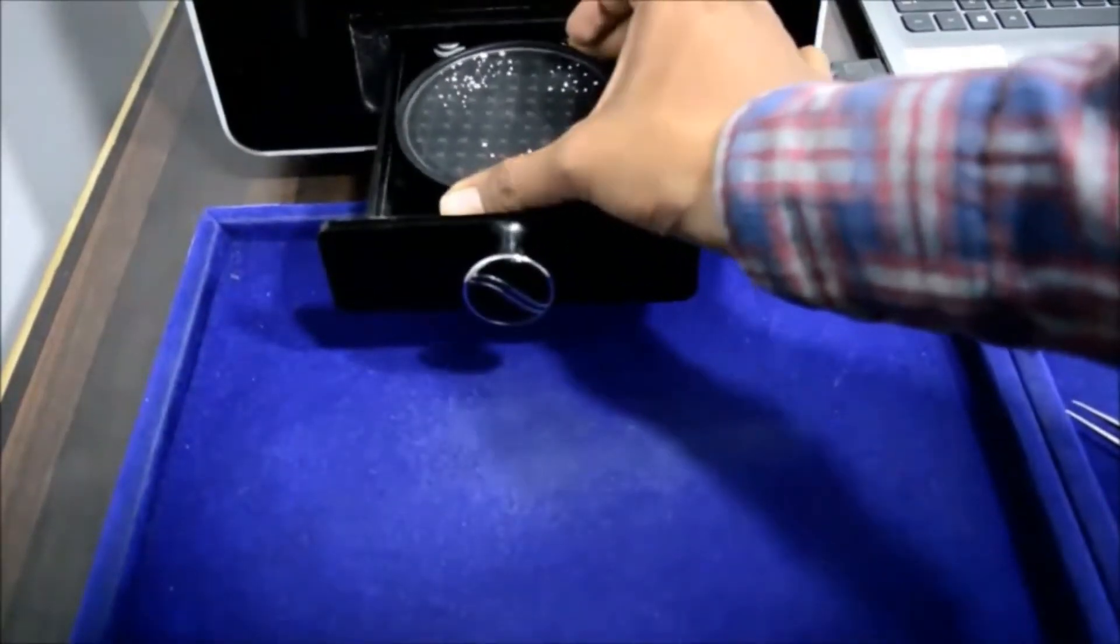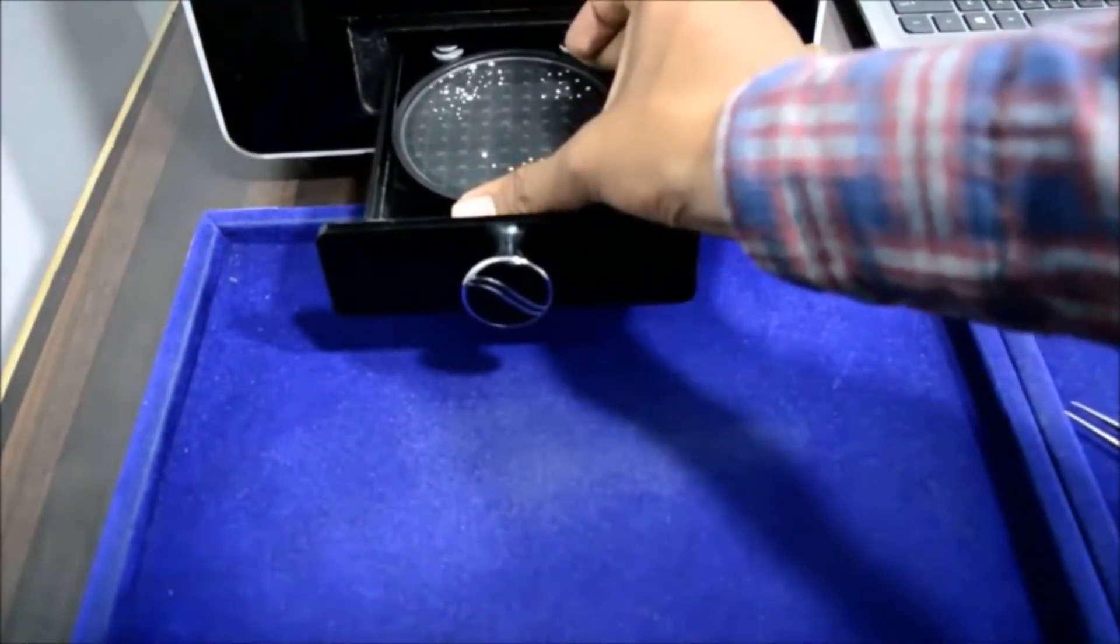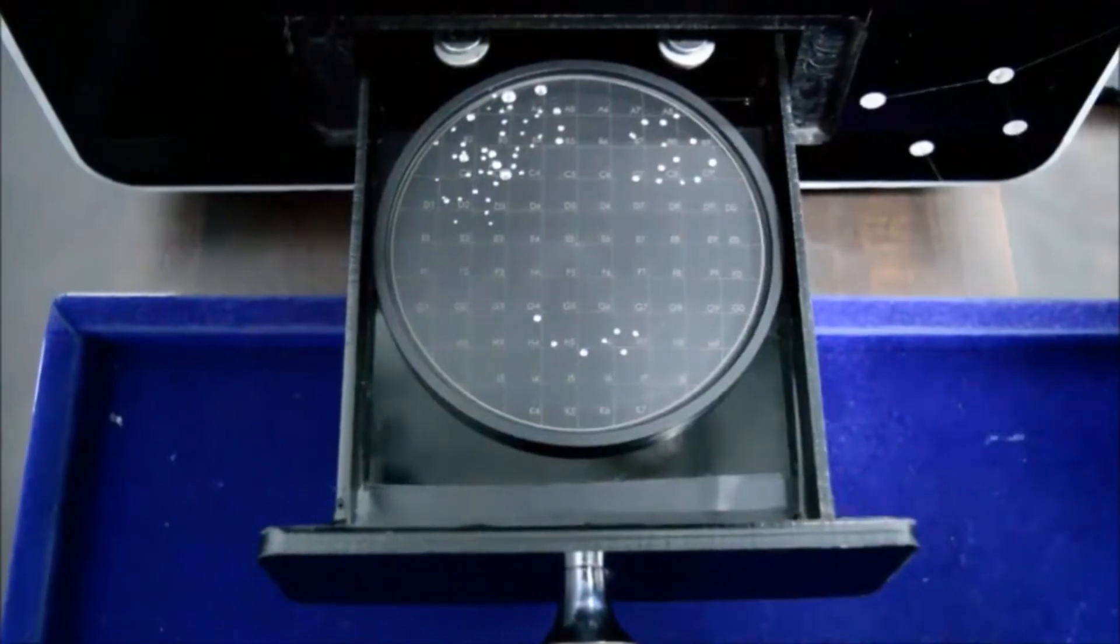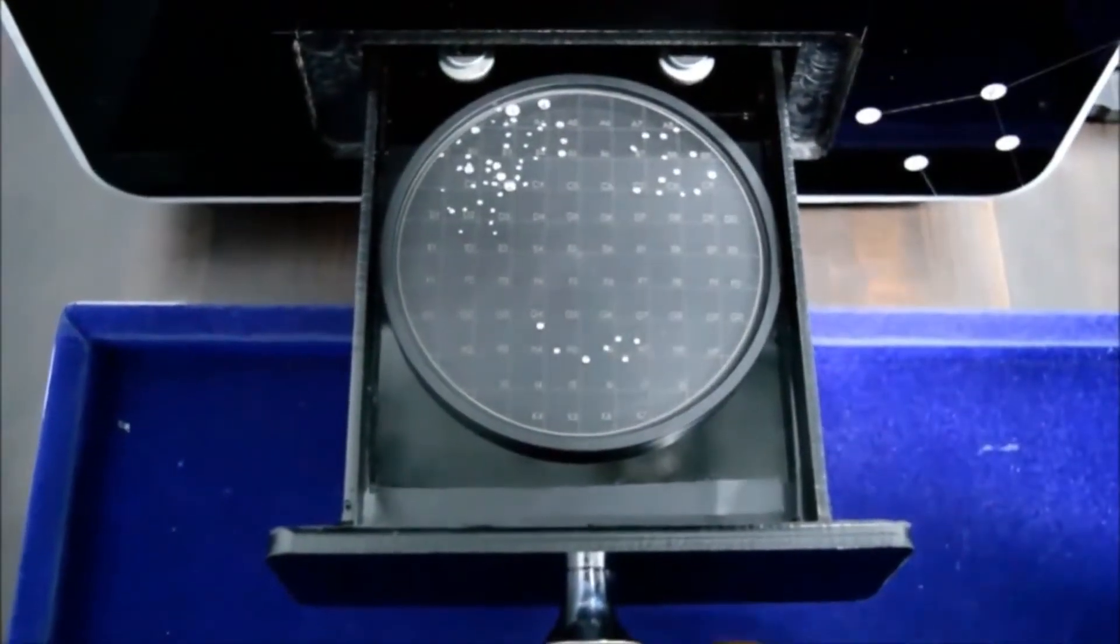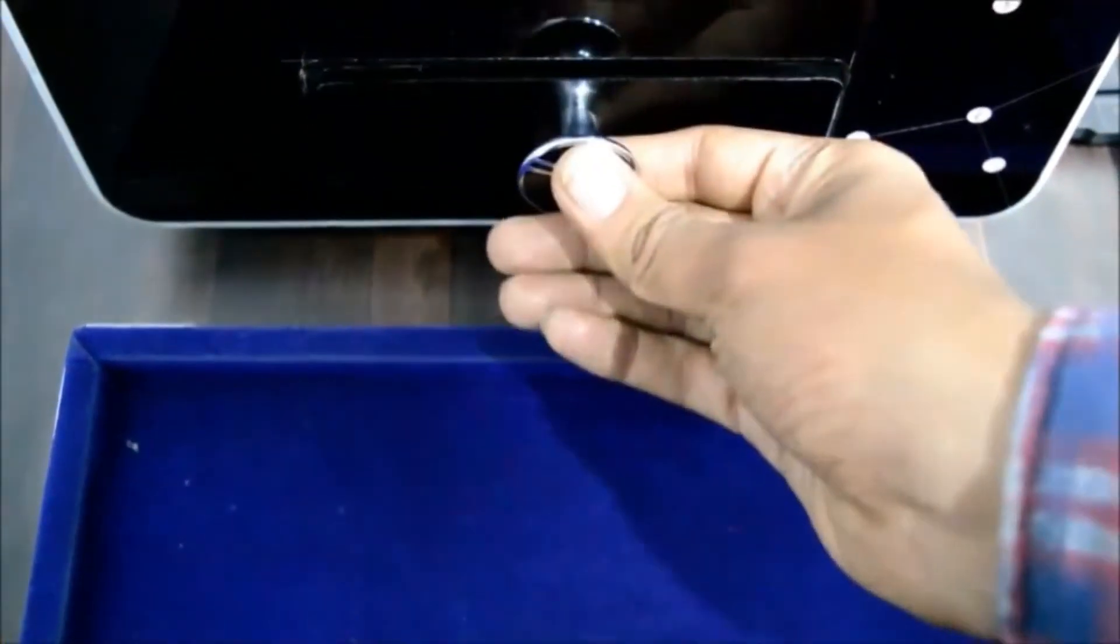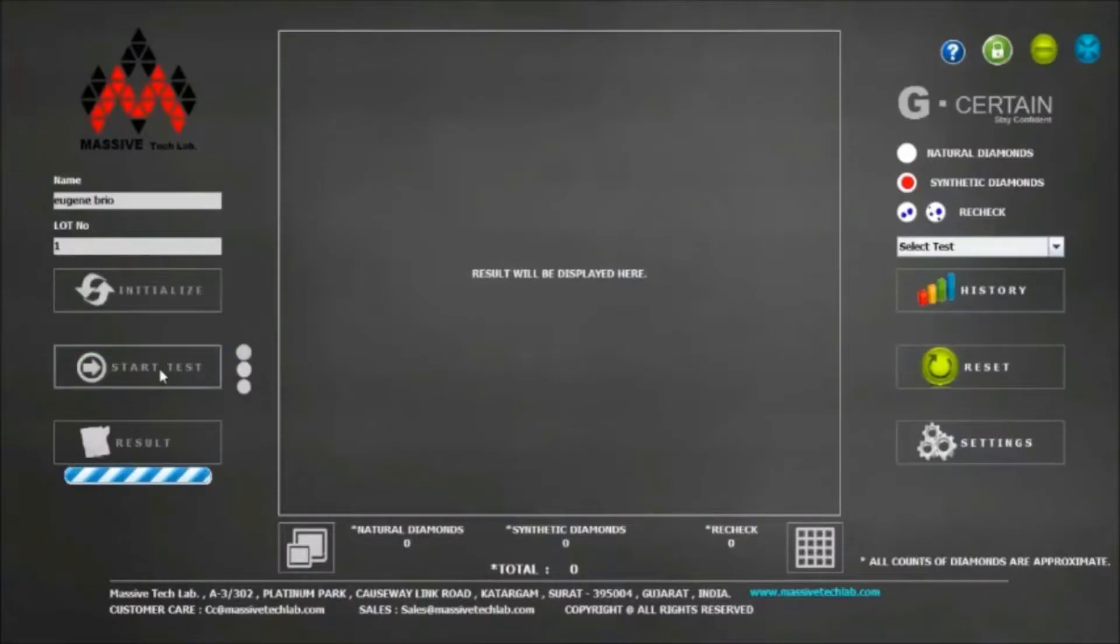Load the circular tray inside slider tray of G Certain. Make sure it is well located inside circular pocket given inside sliding tray. Click on start test button to start the test. Processing bar will appear below result button instantly after clicking on start test button.